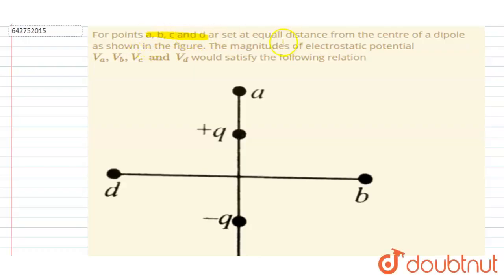As shown in the figure, the magnitudes of electrostatic potential Va, Vb, Vc, and Vd satisfy the following relation. So if you see here, it is said that they are at equal distance from the center of the dipole, right? So this is the center of the dipole.